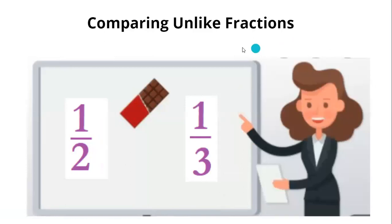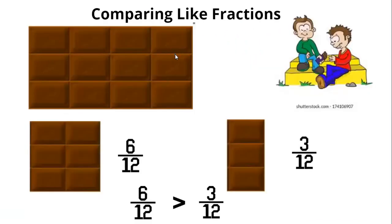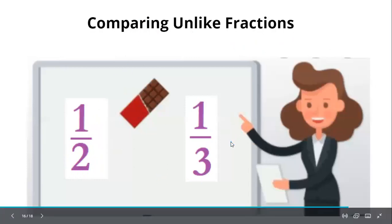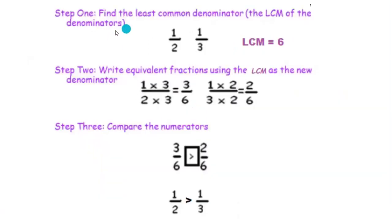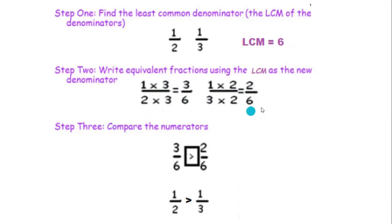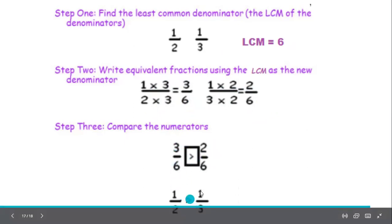Comparing unlike fractions: when denominators are different, we need to make them the same. First, look at the denominators — if they are unlike, make them like by taking the LCM. The LCM of 2 and 3 is 6, so make the denominator 6. Multiply 2 by 3 to get 6, and multiply 3 by 2 to get 6. The same number must be multiplied with the numerator: 1 × 3 = 3, and 1 × 2 = 2. Now compare: 3/6 versus 2/6 — the denominators are the same, so 3/6 is greater. Therefore 1/2 is greater than 1/3.